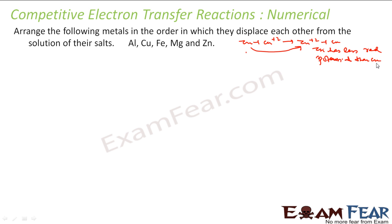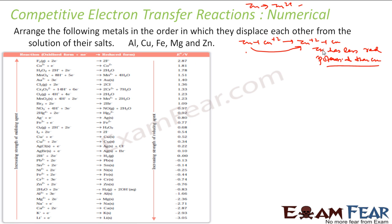Zinc to Zn2+ — this reaction is more favorable, meaning zinc has more oxidation potential than copper. But we have the chart for reduction potential. Zinc has less reduction potential than copper, which means the one with less reduction potential will displace the one with higher reduction potential.